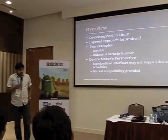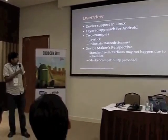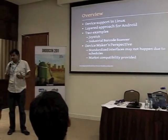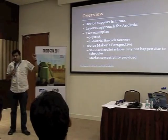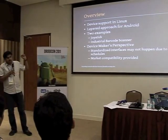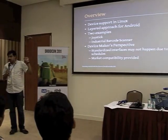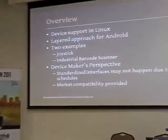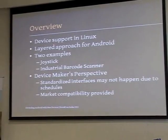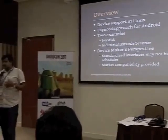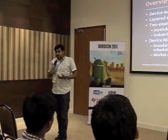So what are we going to do in this talk? We'll first look at how devices are supported in Linux — this is important because Android is at heart a Linux kernel with modifications. Then we'll jump into our layered approach for supporting new devices. We'll give you two examples: the joystick and the industrial barcode scanner. Bear in mind that all of this is from a device maker's perspective, where there's typically a need for faster time to market and compatibility with the Android market, since the same applications run on multiple devices.